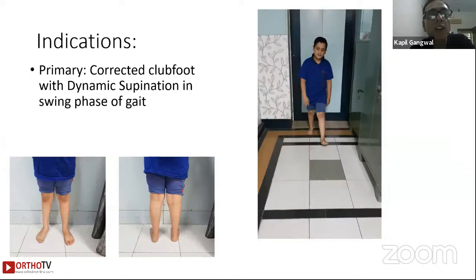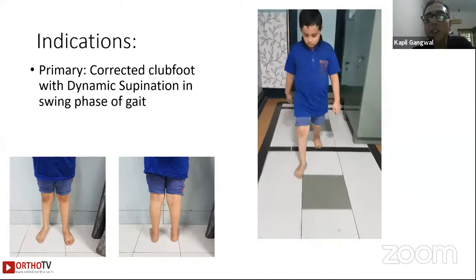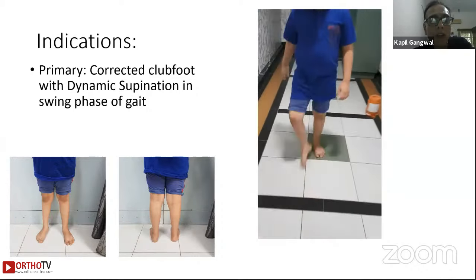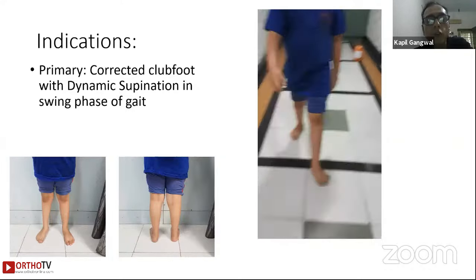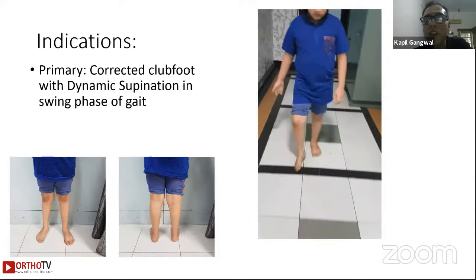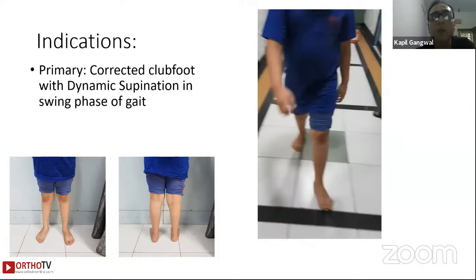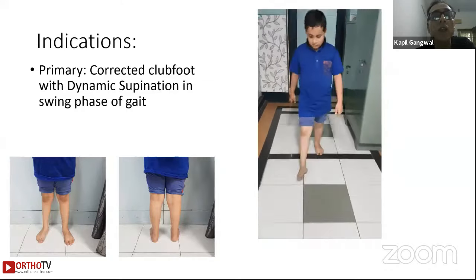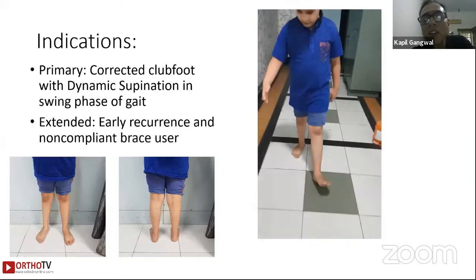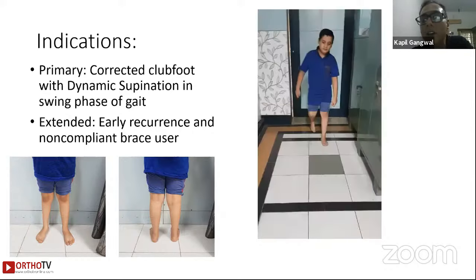The primary indication is a child with a corrected clubfoot who has dynamic supination in the swing phase of gait. You can see this child walking here — you can see the front and back of the foot which looks nicely corrected, but when he walks he turns his foot inside. That's the typical dynamic supination one sees with these children.